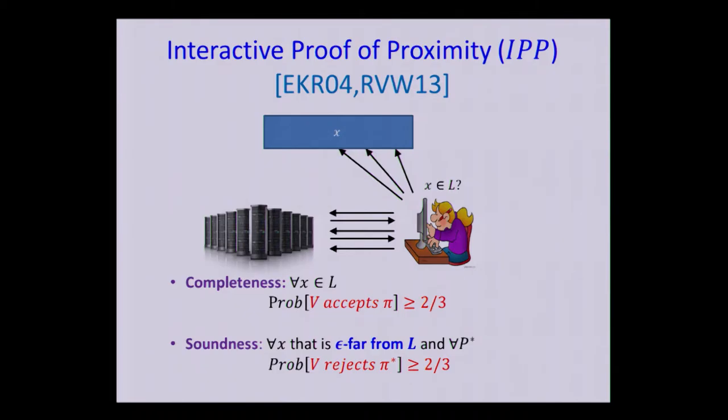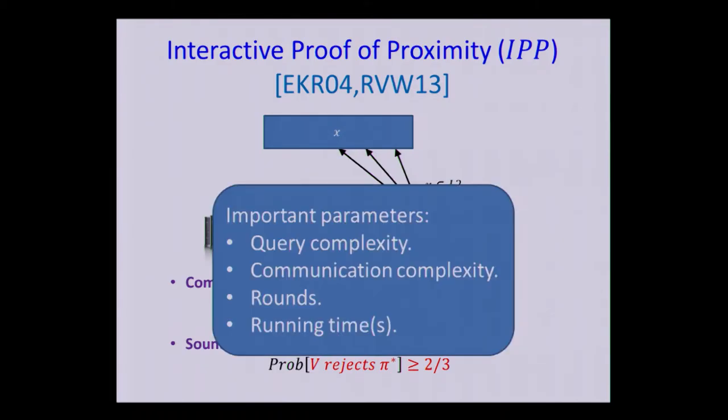So that's the notion of an interactive proof of proximity or IPP. Some important parameters to bear in mind within this model are the query complexity, which is the number of queries that Alice makes to our input X, the amount of communication with the prover, something that we'd like to minimize, the number of rounds of interaction, of course, we don't want to be too large, and obviously the running time. So we don't want the verifier to work too hard. In particular, we'd like the verifier to run in sublinear time. And also, the application that we have in mind for outsourcing computation, we also don't want the honest prover to work too hard. So in this model, cheating provers can be unbounded, but we'd like the honest prover to be, say, polynomial time.